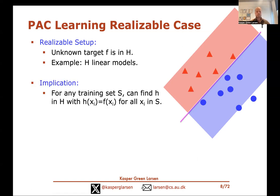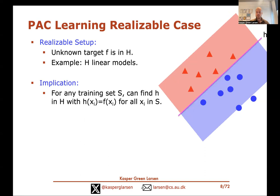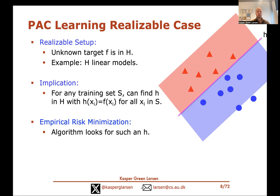In the realizable setup, given a training dataset S of labeled points, it's always possible to find a hypothesis that gets all labels correct on the training data — h(x_i) = f(x_i) for all x_i in S — because the unknown target function lies in H. The algorithm might not find the exact f; it might find another hyperplane that also gets all training labels correct. This leads to a natural learning algorithm called empirical risk minimization: simply find a hypothesis that gets all training labels correct.